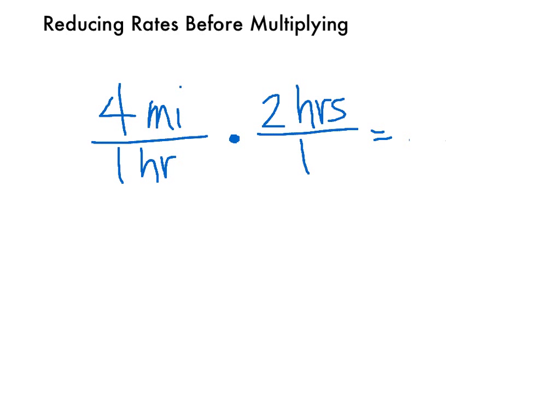In this problem, the unit hours is below and above the division line. So we can cancel them out just like this, leaving us with a very simple multiplication problem. 4 miles times 2 equals 8 miles over 1, which equals 8 miles.